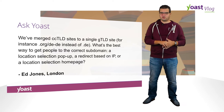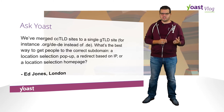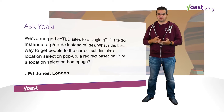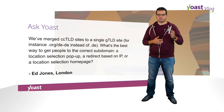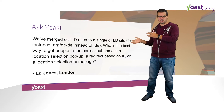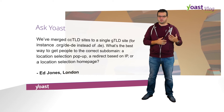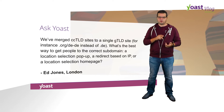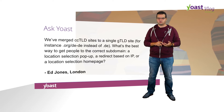AtJones emailed from London, UK. We've merged ccTLD sites to a single gTLD site, so for instance .org, .de, etc. into one domain where they have slash de, slash en, etc. What's the best way to get people to the correct subdomain? A location selection pop-up, a redirect based on IP, or a location selection homepage?